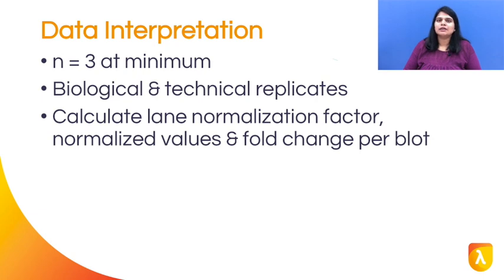Ideally, you should end up with 3 blots that are a collection of biological and technical replicates. You will need to calculate the normalization factor for each blot, along with normalized signal values for each lane in each blot, and finally the fold change for each blot.